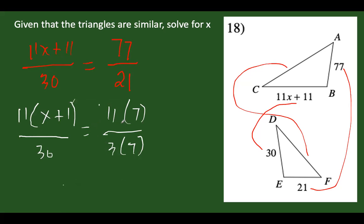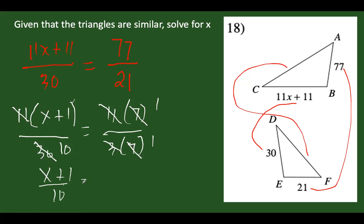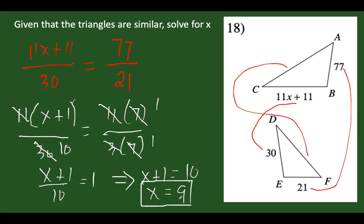I can cancel 11 on both sides and cancel 7. The 30 divided by 3 becomes 10. This gives: x plus 1 over 10 equals 1. So x plus 1 equals 10, and x equals 9. Therefore, the value of x equals 9.